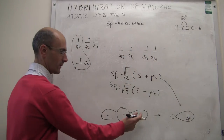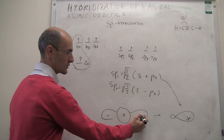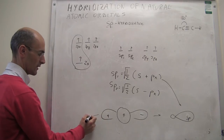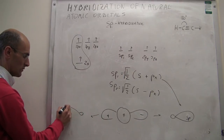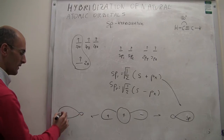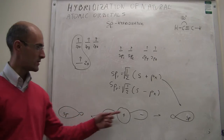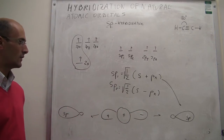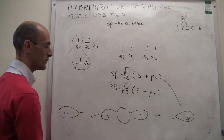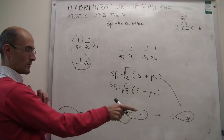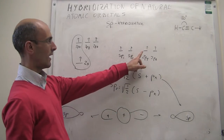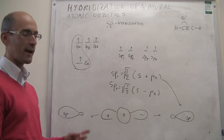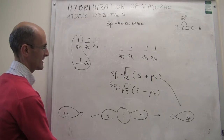For the second hybrid orbital, the only thing that changes is that the orientation of the 2px orbital is flipped. When you examine how this combination looks, you find an orbital pointing in the opposite direction. Notice that the directions of these two orbitals are antiparallel — 180 degrees to each other. So if we draw both hybrid orbitals pointing in opposite directions along the same axis along with the unhybridized 2py and 2pz orbitals, we get the orbital structure for a carbon atom that has undergone sp hybridization.